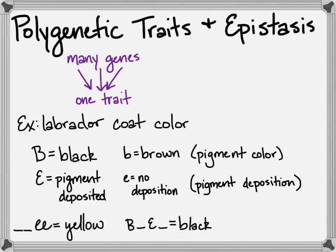Black, all you need is a single dominant b, a single dominant e. The others could be either one, and you'll have a black lab. Chocolate labs, you have to have the recessive b's and at least one dominant deposition, pigment deposition gene, and you'll have a chocolate lab.